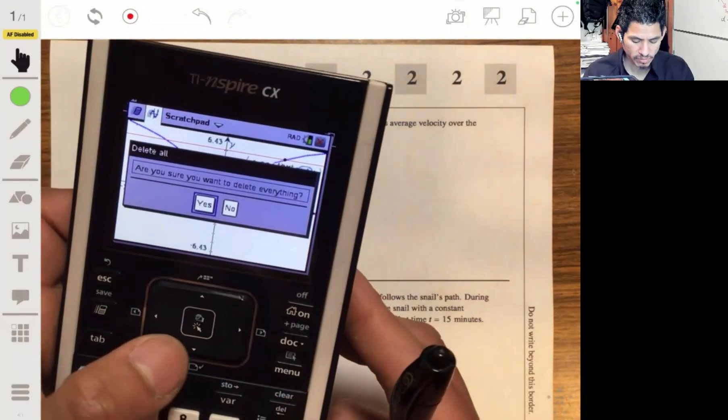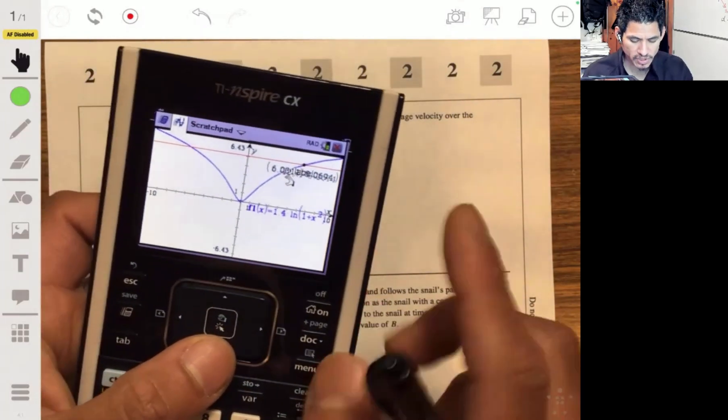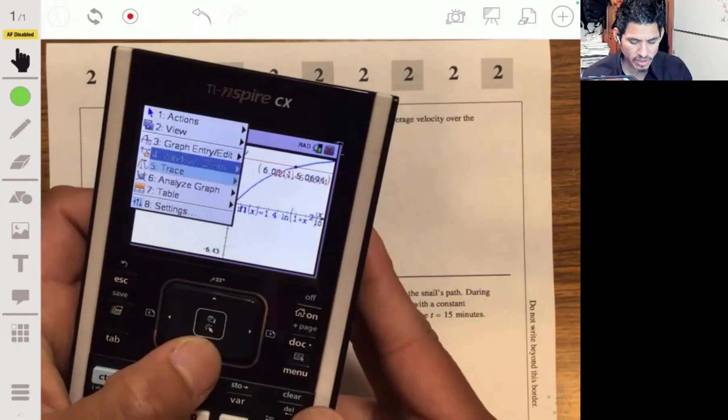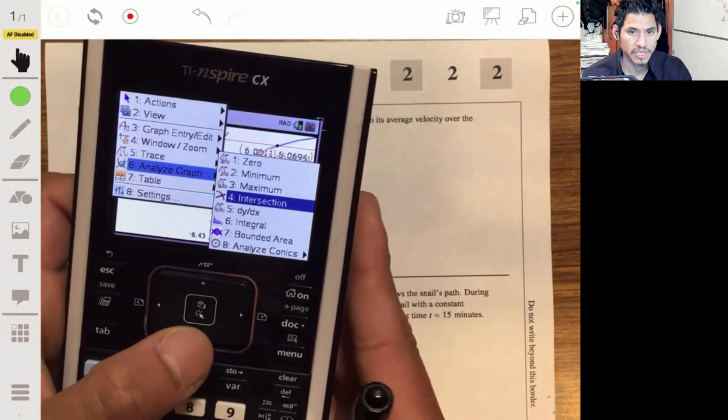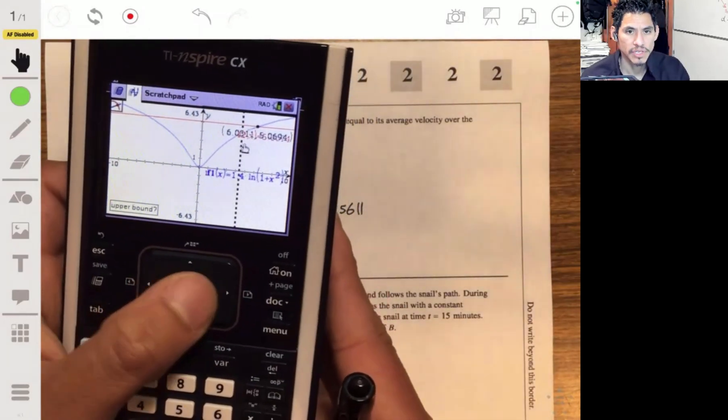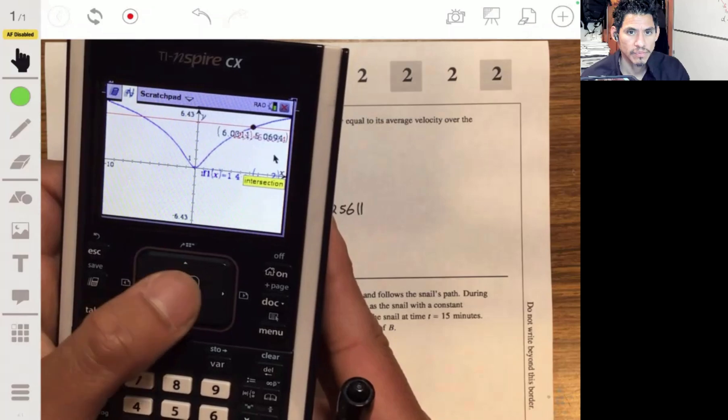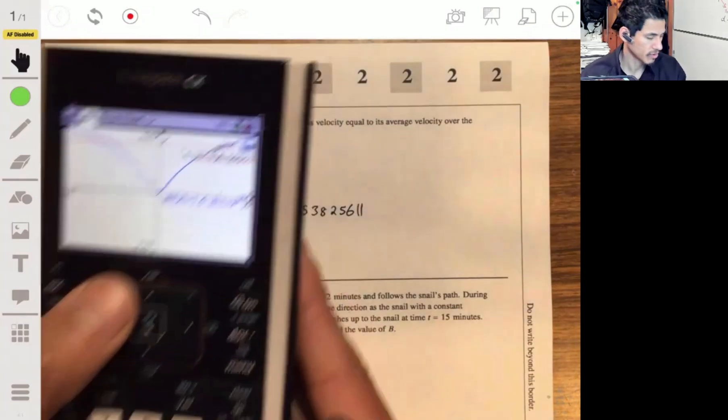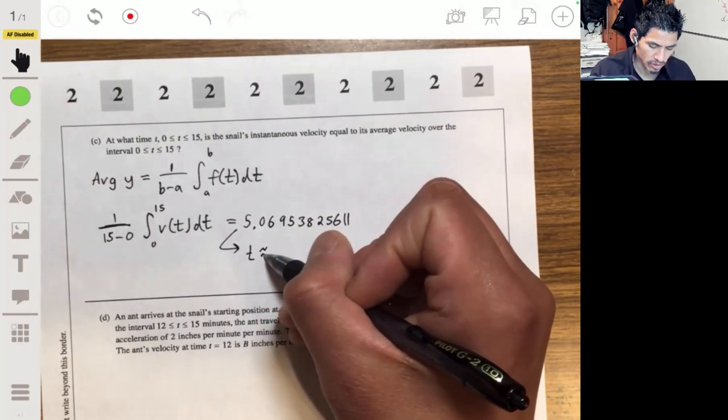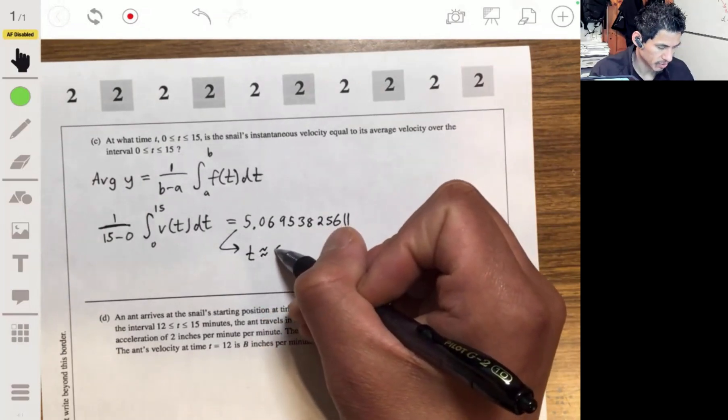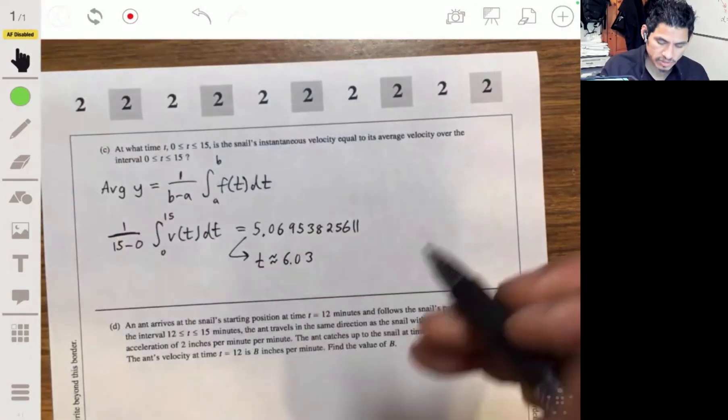And I look for the point of intersection. Let me go back and just show you. You can see the point of intersection there, and here if we were to analyze the graph, there's an intersection function you can do. But you can see I already found it, it's 6.03-ish, right over there. So they're going to be equal at about 6.03 minutes.